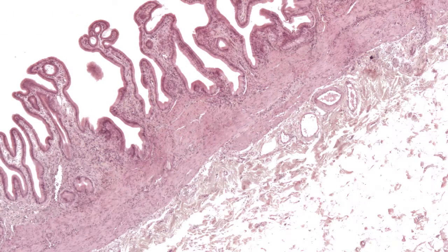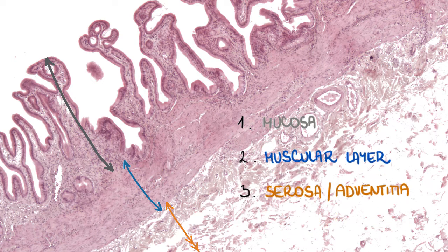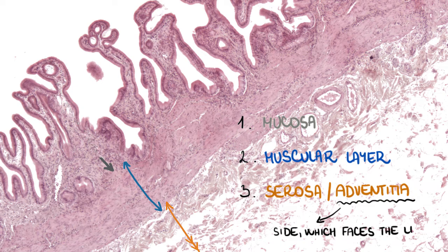The wall of the gallbladder comprises three layers: mucosa, muscular layer, and serosa or adventitia. Adventitia is located on the side which faces the liver.